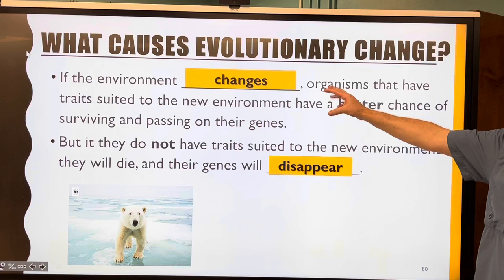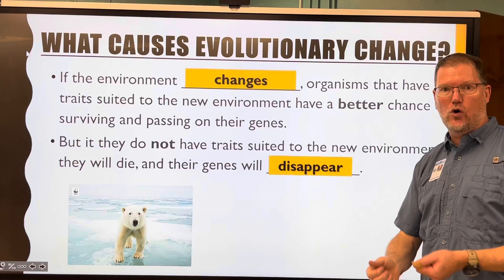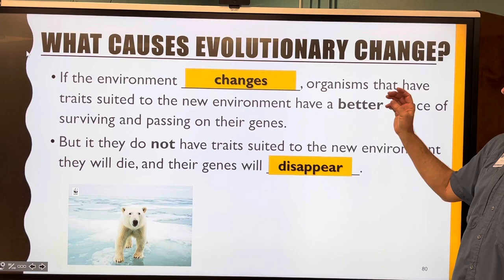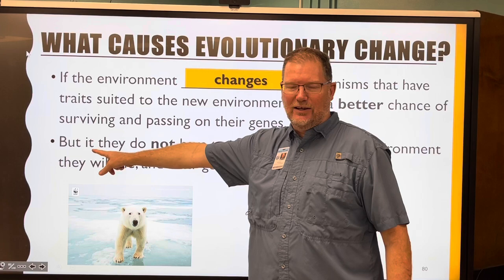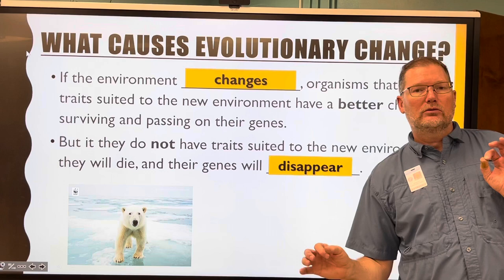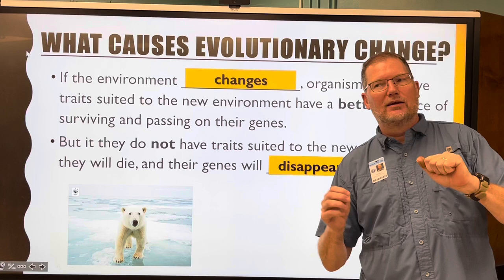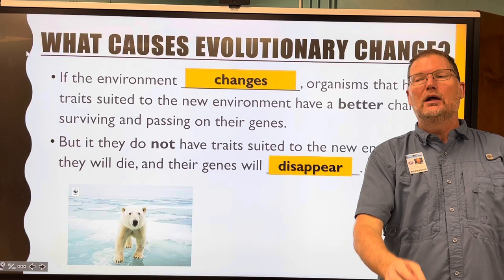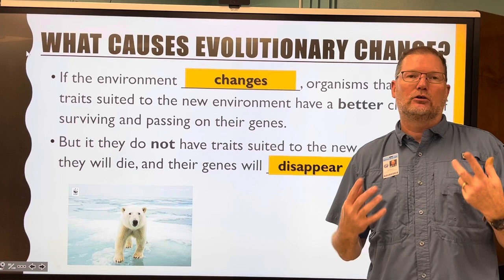New traits make organisms more suited to the environment, giving them a better chance of surviving and passing on those genes. But if they do not have traits suited to the new environment, they will die and their genes will disappear — just like the moths in our activity. Those moths' genes are out of the gene pool, and any moths that are left over will survive long enough to have offspring and pass those genes on.